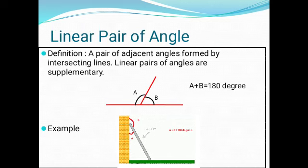Linear Pair of Angles: A pair of angles which are adjacent and formed by an intersecting line is called a linear pair. Linear pair of angles are also supplementary. Supplementary means an angle which measures 180 degrees.